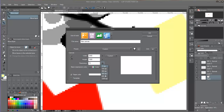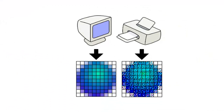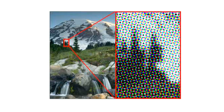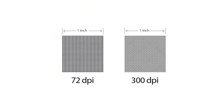DPI stands for dots per inch, a printing term that indicates the number of printed dots that will appear in one square inch of paper. For our drawing purposes, the DPI can be thought of as the number of pixels.